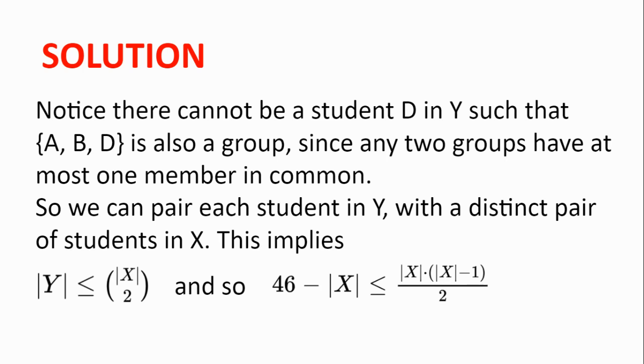And because the number of students in Y is 46 minus the number of students in X, 46 minus |X| is less than or equal to |X| multiplied by |X| minus 1 divided by 2.